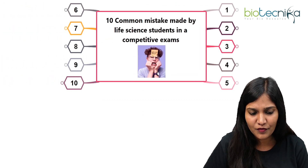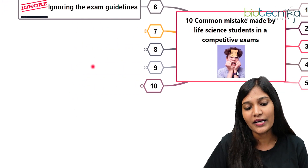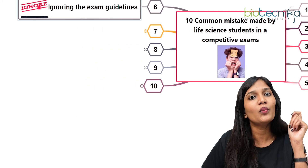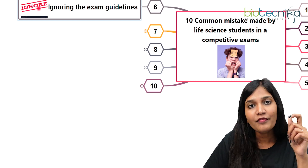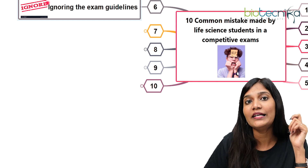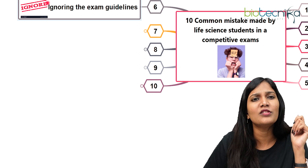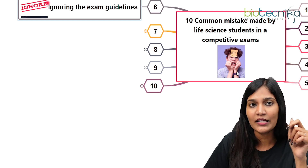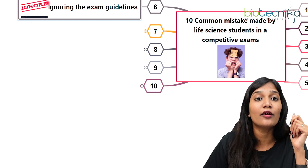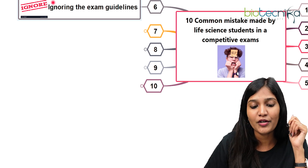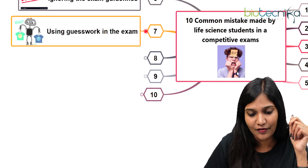Always go for eliminating wrong answers and then picking the right answer from what remains. The next mistake is ignoring the exam guidelines. Whenever a question paper is given, during those first 15 minutes, spend about two to three minutes reading the exam guidelines. If you ignore the exam guidelines, it can also ruin your competitive examination. Never ignore the guidelines given in the question paper.